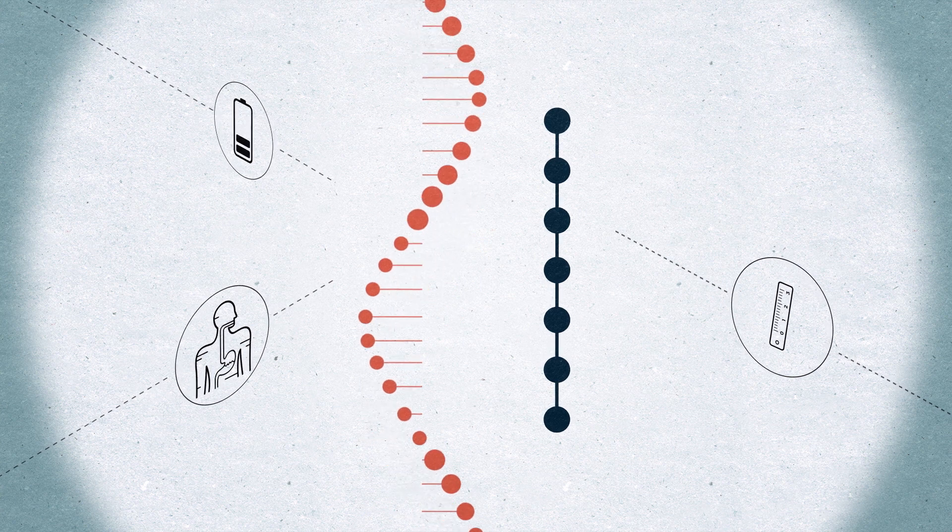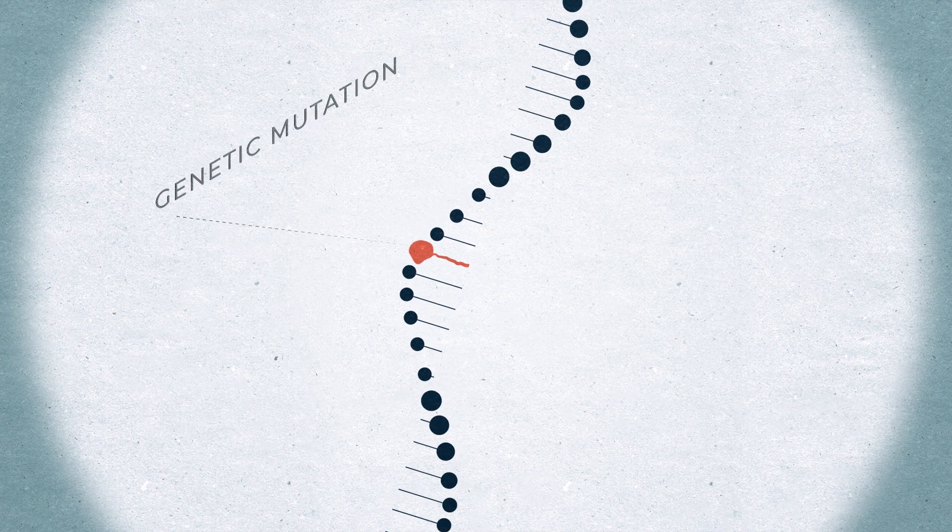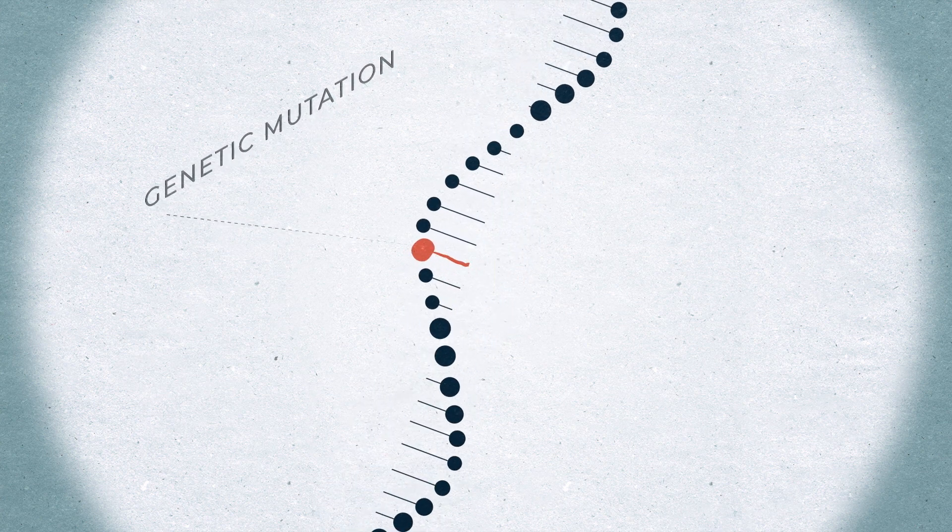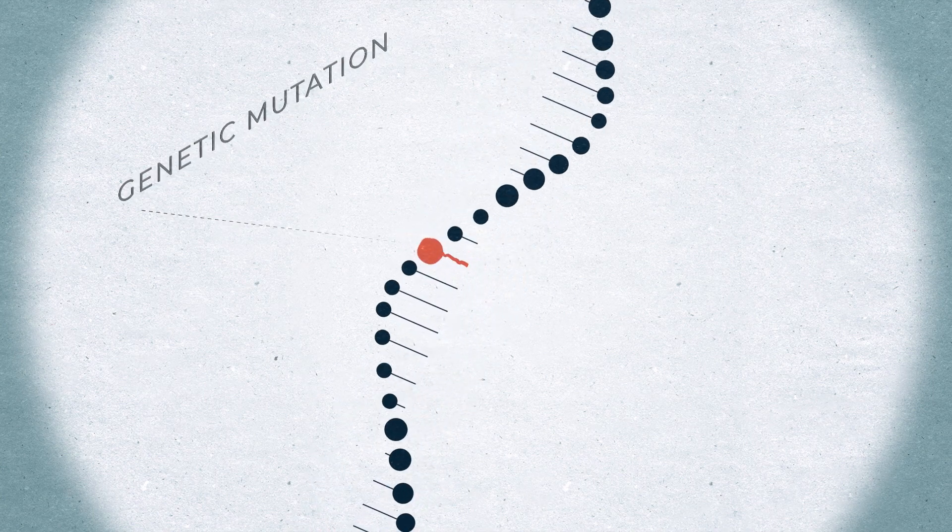Genes don't always work the way they were intended. Sometimes there can be an alteration within a gene called a genetic mutation. This can cause our body to make too much or not enough of these proteins which can hurt our bodies and alter some of our body's functions.